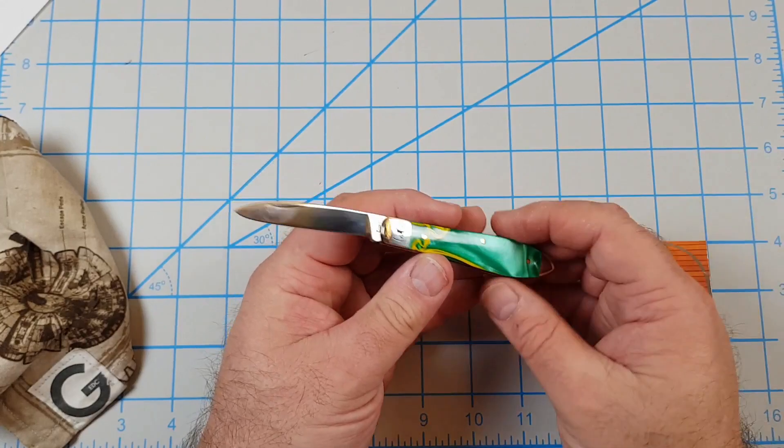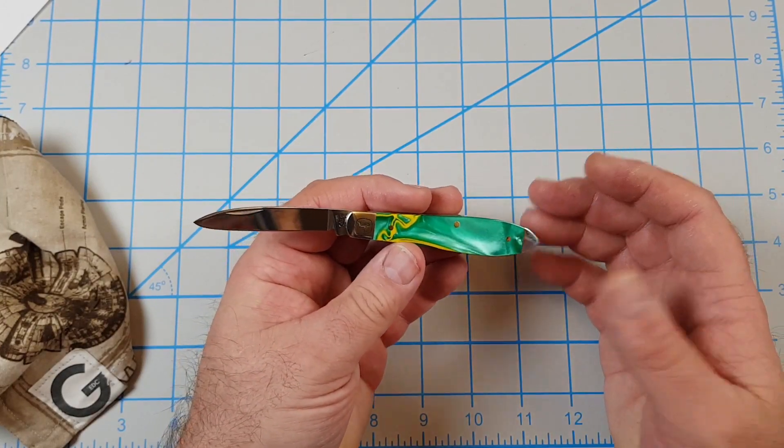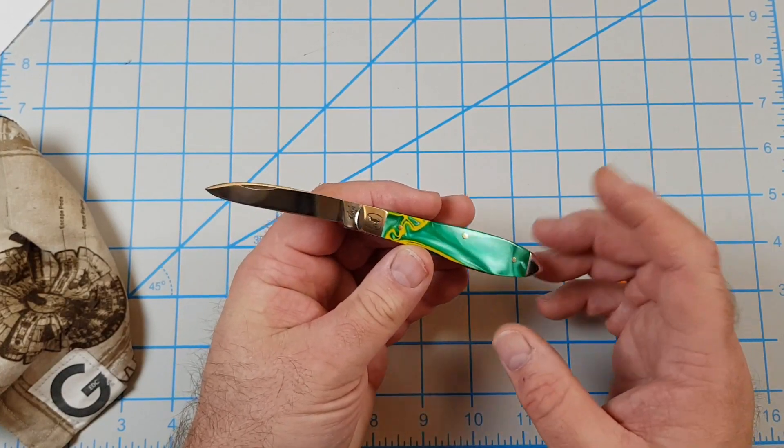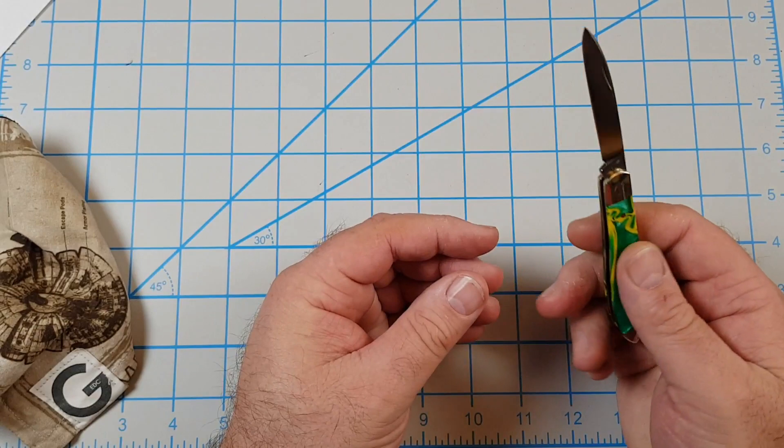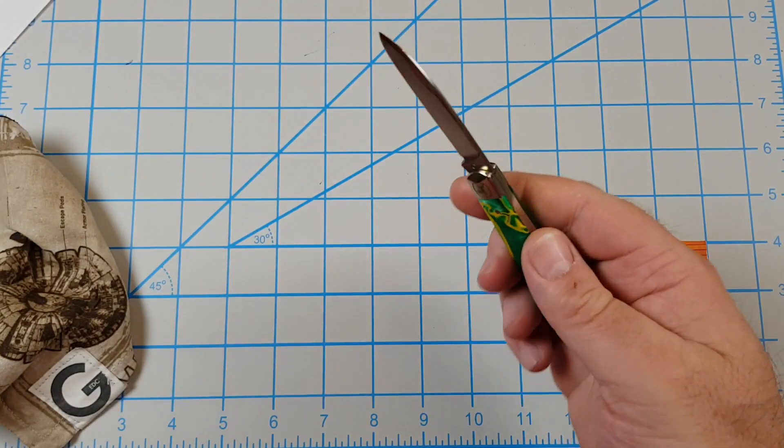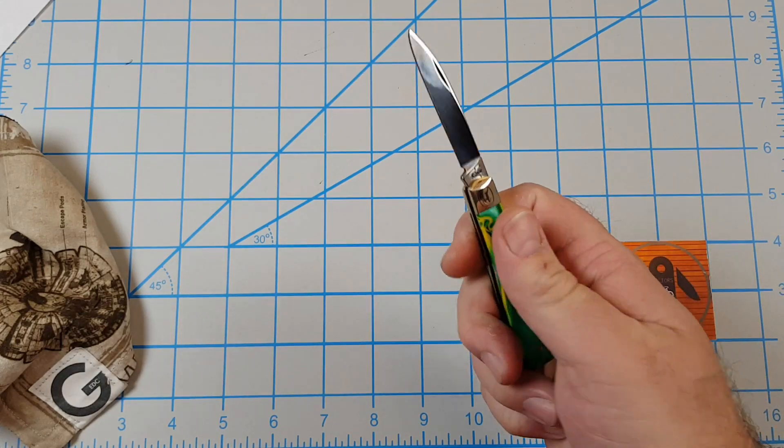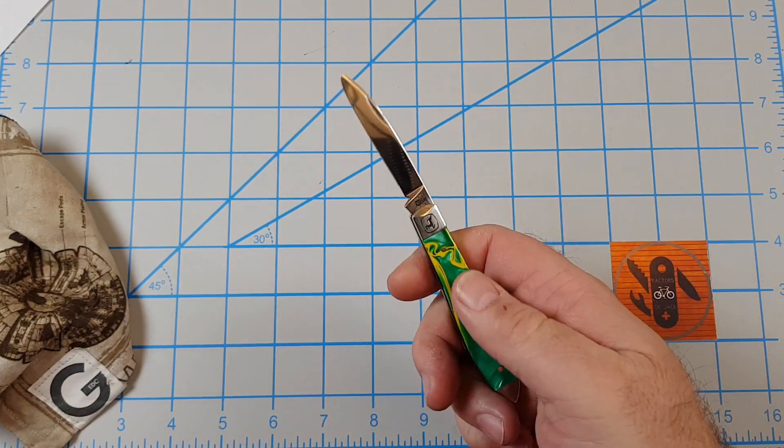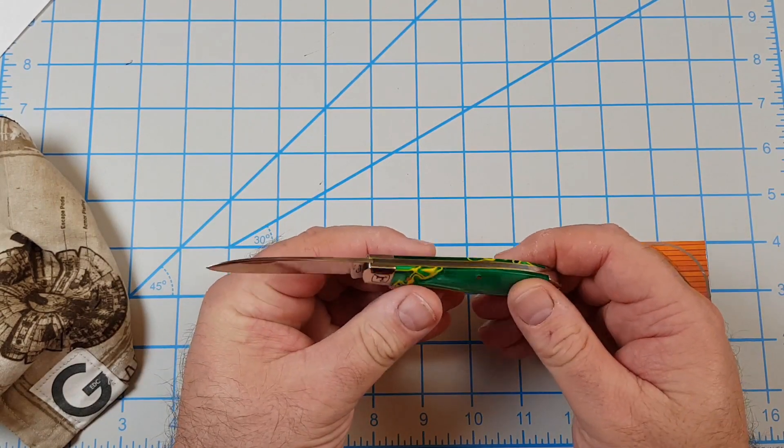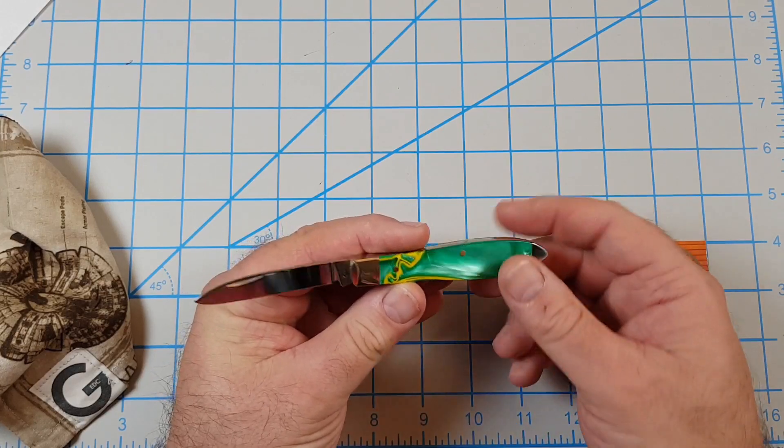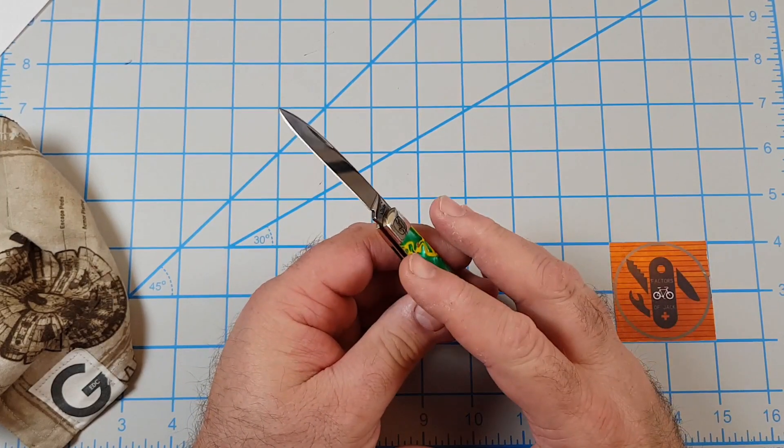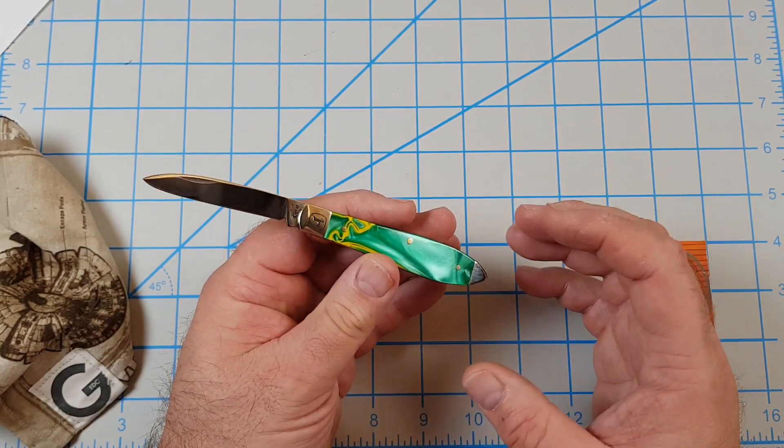The handle is 3.625 inches long. It's got this green and yellow swirl Kirinite, which is some kind of acrylic. It's cool looking, but even for being smooth, it's got some grip to it - it's kind of a grippy material, but perfectly smooth. It's got brass pins, brass liners, nickel silver bolsters.